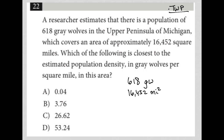The question asks which of the following is closest to the estimated population density in gray wolves per square mile. So the question is GW per — 'per' always means divided by, keep that in mind — square miles. We have our GW in the numerator and square miles in the denominator.